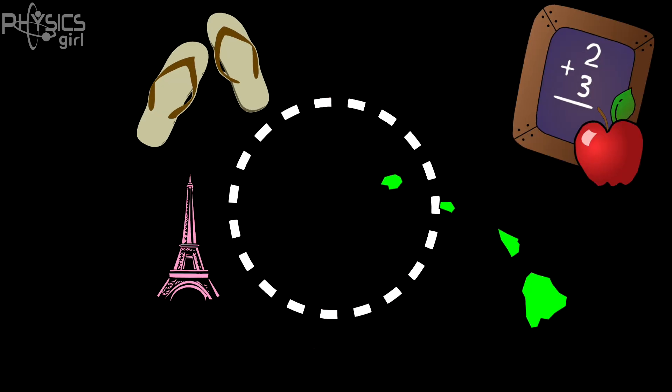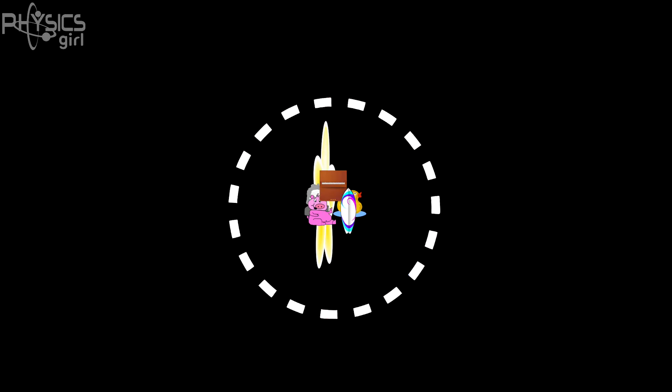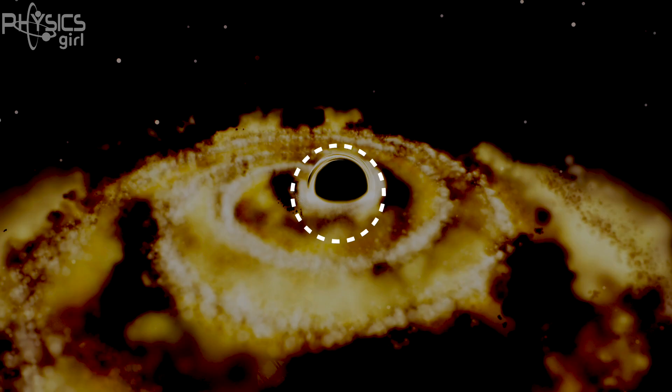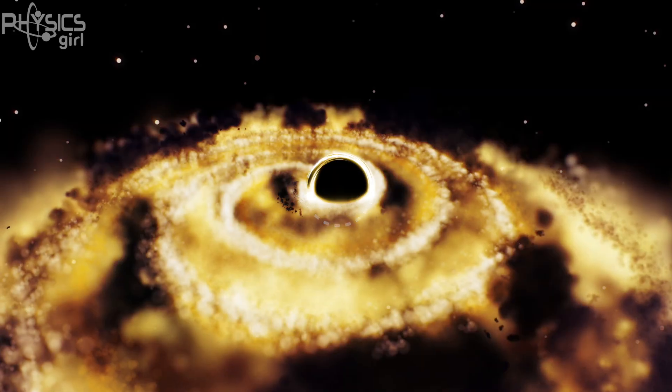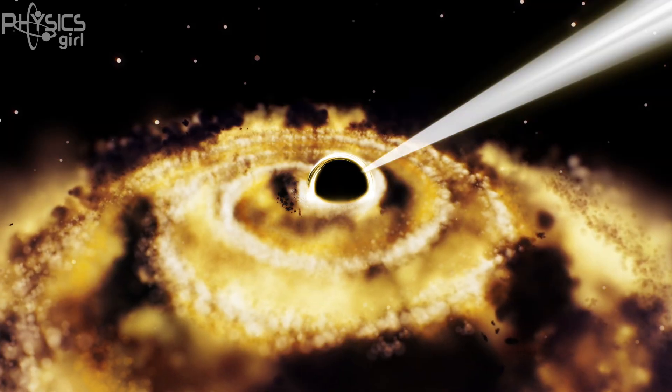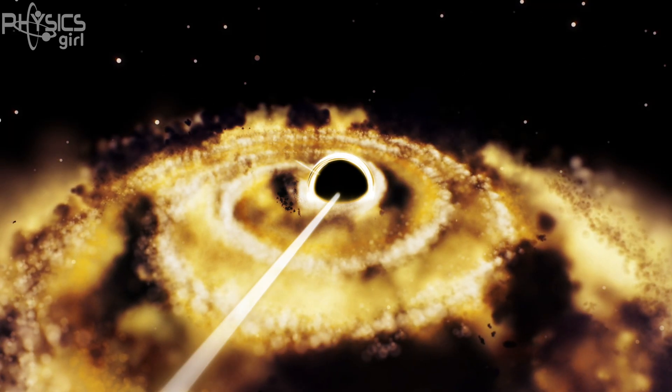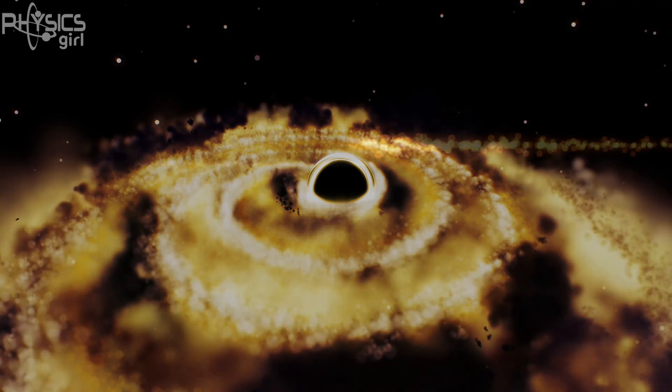So what is a black hole? In short, it's a region of space where there's so much concentrated mass that gravity is so strong that nothing escapes — not even light.